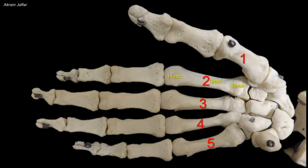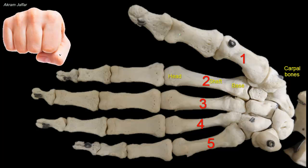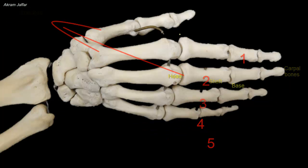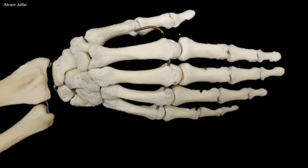Each metacarpal is considered a long bone in the sense that it has a shaft and expanded ends. The proximal bases of the metacarpal bones articulate with the carpal bones. The distal heads articulate with the proximal phalanges and form the knuckles of the hand. The third metacarpal head is the most prominent. Note that the metacarpals, except the first one, are closely bound together; hence isolated fractures tend to be stable.